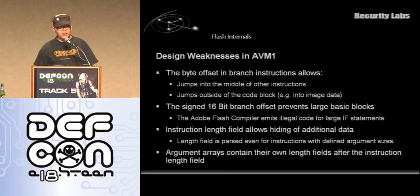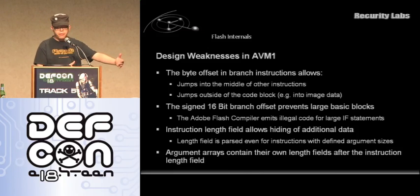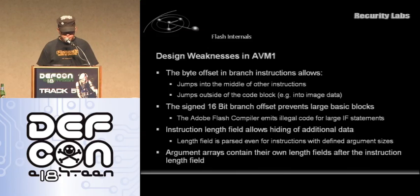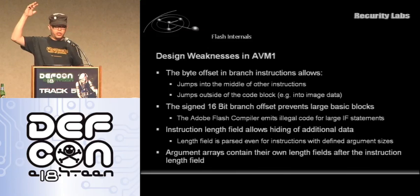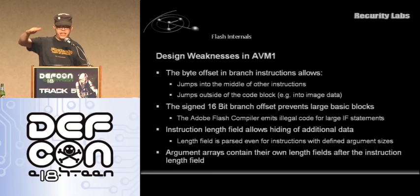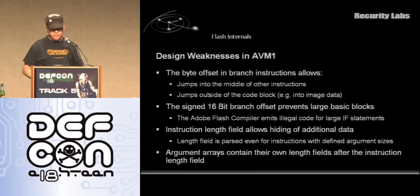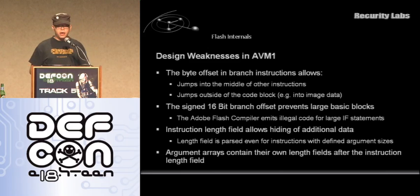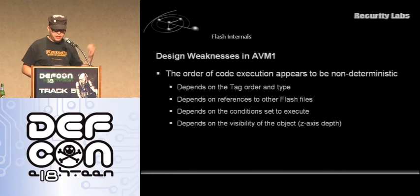The 16-bit signed branch offset is also an interesting design decision — you can only jump over about 32K because then your bits run out. I was wondering what they do if you have an if-statement with a large body, so I took the official Flash player development environment — CS4, latest version — and made an if-statement with a large body. It never complained, produced the Flash file, but it is perfectly invalid code because it jumps as far as it can and then executes the rest of the body anyway. The various length fields in the instruction set also allow you to hide a lot of data in the tail of the instruction, and that's commonly done in Flash code obfuscation software. And as I said, the order of code execution is highly dependent on where the shape of the object currently is on screen.